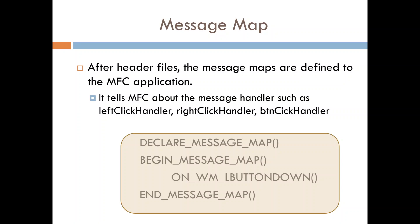The format for a message map is: DECLARE_MESSAGE_MAP, BEGIN_MESSAGE_MAP, and END_MESSAGE_MAP - with all the events you are going to use listed in between. The message map gives a list of all the events which that particular program is going to use. In VC++, events are called message handlers - such as left click handler, right click handler, button click handler, and so on.